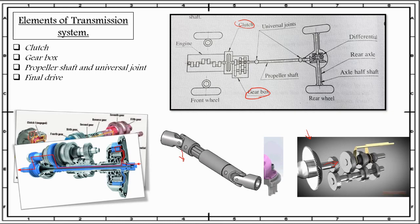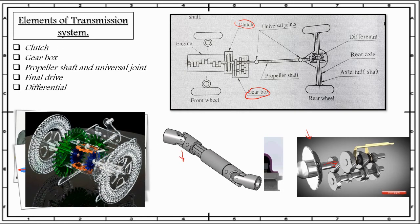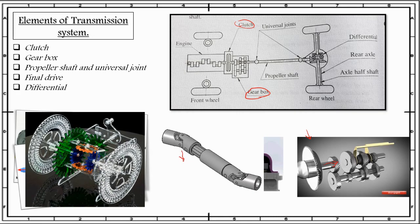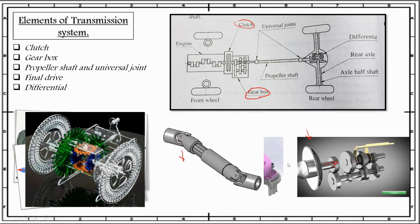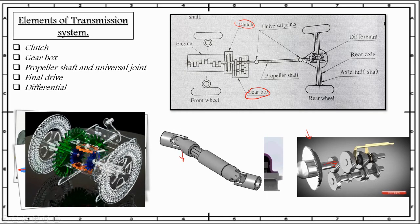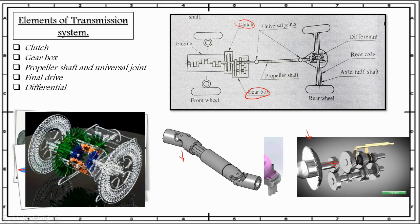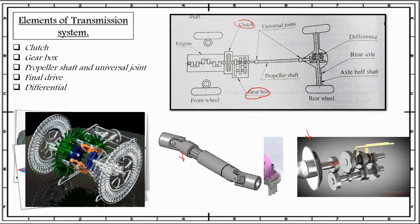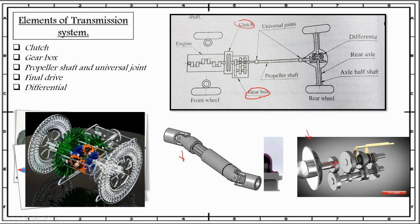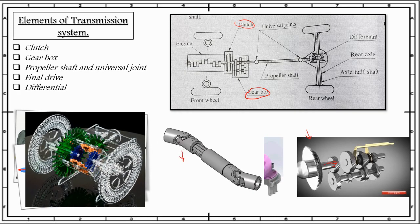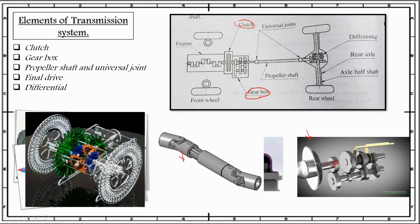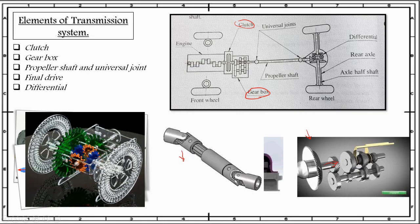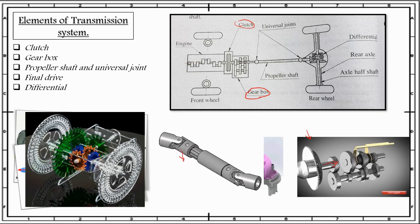Next is the final drive, and right after that is the differential. The final drive basically diverts the power at a right angle towards the driving wheel and provides the final gear reduction between the engine and the driving wheel. The differential allows the outer wheel to run at greater speed than the inner wheel while negotiating a turn. As you can see in this animation, the green gears are the final drive, and the mechanism shown with orange and blue gears constitutes the differential mechanism. This is just a brief overview; the detailed study will be explained in later classes.